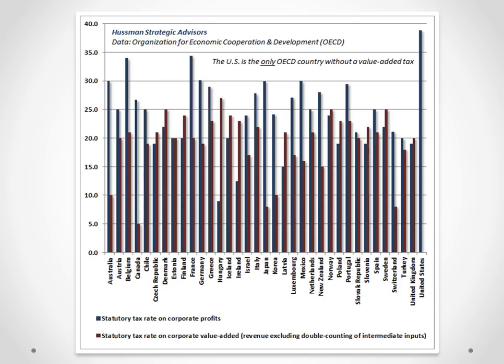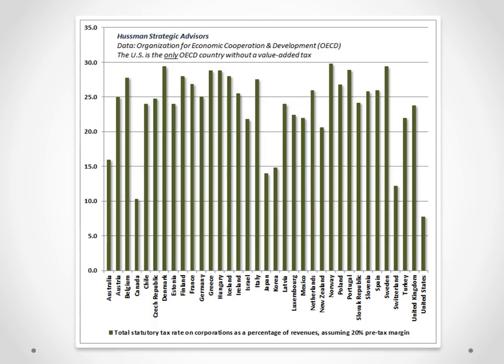To get a sense of the combined level of taxes on corporations, we can blend the two taxes by assuming that corporate profits are about one-fifth of corporate value-added — and if you look at the data, that figure is just about right. This chart shows the overall level of corporate taxes across countries as a percentage of revenue, and what you see is that total U.S. corporate taxes are the lowest among them all.